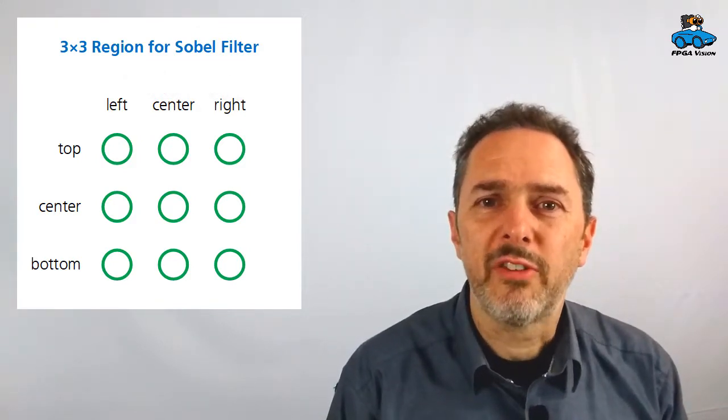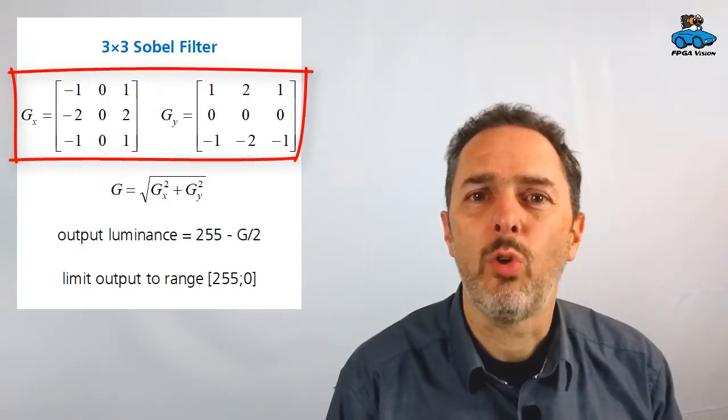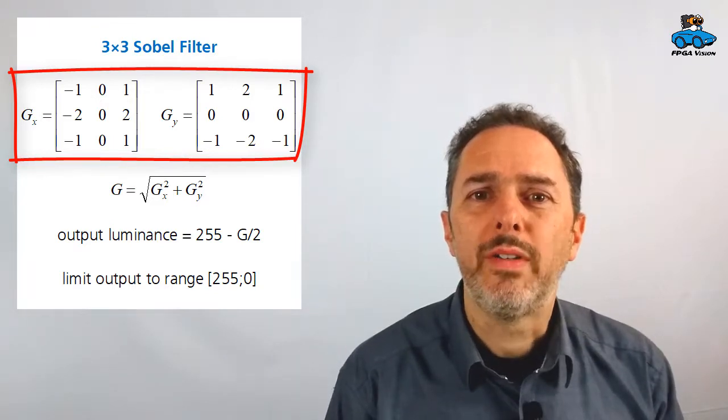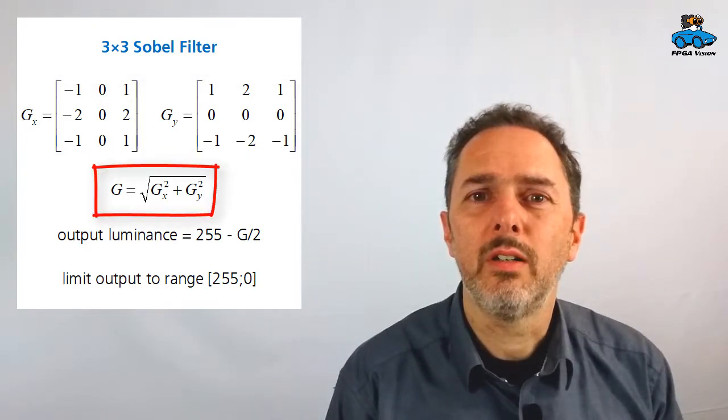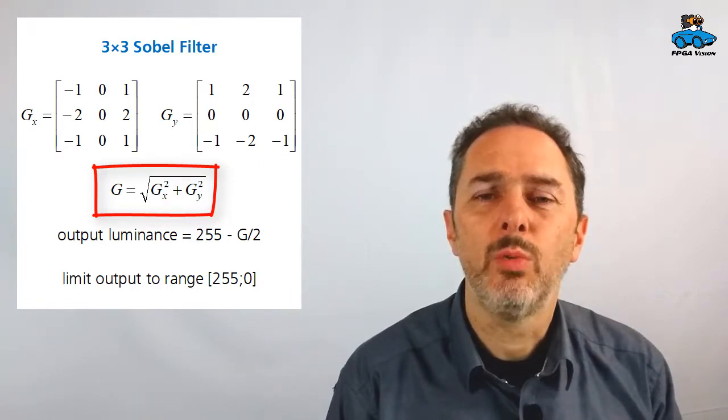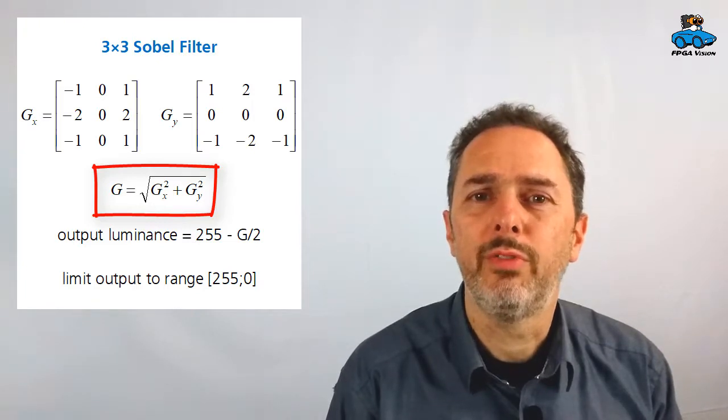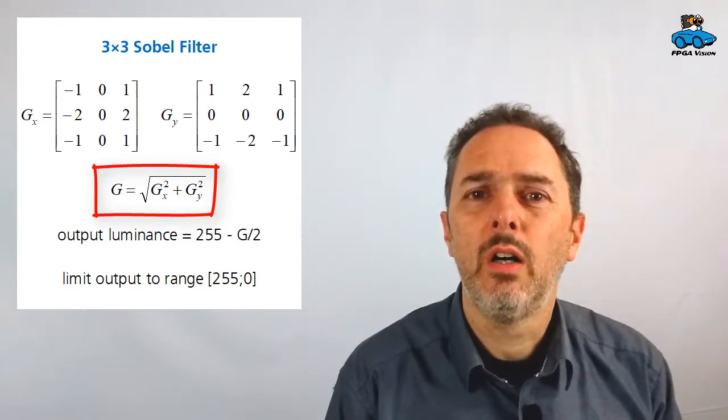On this 3x3 matrix we will then perform a Sobel filtering, which means we have a filter matrix for x and another for y direction. We take the square of these results, add them, take the square root and we get a value g, which is an indicator of an edge. So if there is a high value of g, we have an edge. If there is a low value, we don't have an edge.